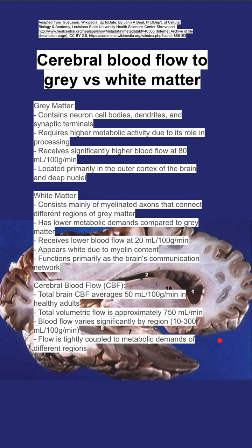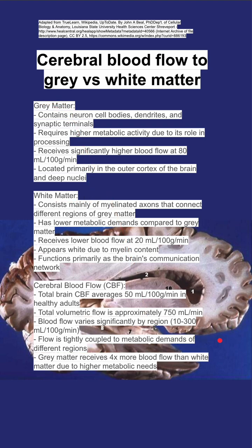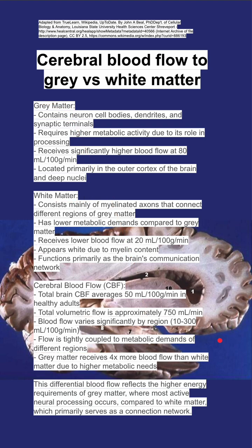The flow is tightly coupled to the metabolic demand of different regions. Gray matter receives four times more blood flow than white matter due to higher metabolic needs. This differential flow reflects the higher energy requirements of the gray matter, where most active neural processing occurs, compared to the white matter.